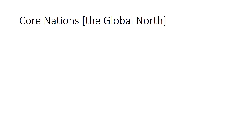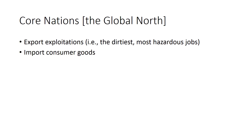Core nations are those on top. They have the primary economic power. They are able to export exploitation and import consumer goods. What this means is that they are in the best position to send the hard, dangerous, or low-paid jobs elsewhere while still reaping the rewards of those jobs. The overall standard of living in these countries is fairly high.